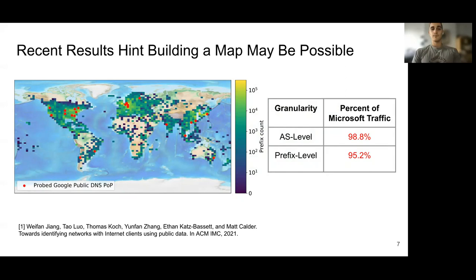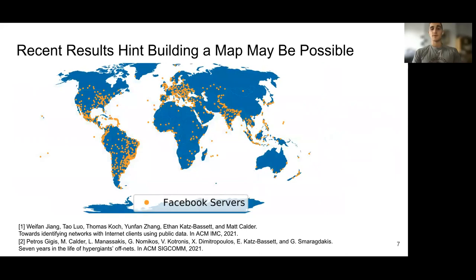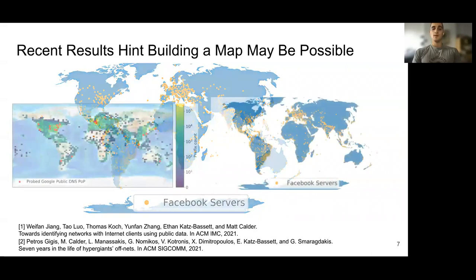This next figure shows results from our recent paper at SIGCOMM. The yellow dots show Facebook servers uncovered using TLS scans. Facebook deploys servers in thousands of networks around the world, and we can enumerate them all using a single vantage point. These figures suggest we're well on our way to building the first two components of the internet traffic map.